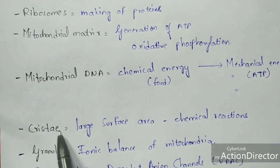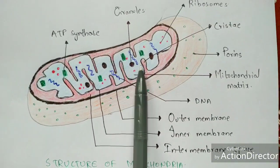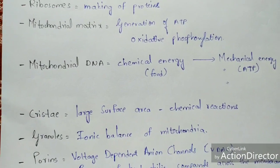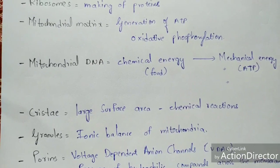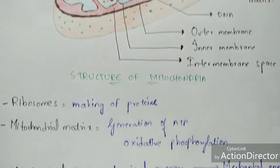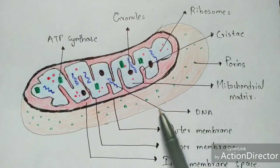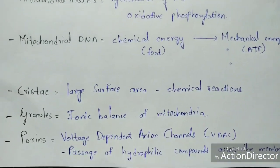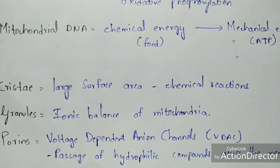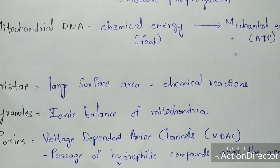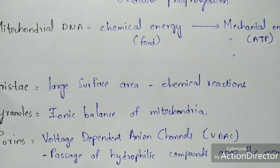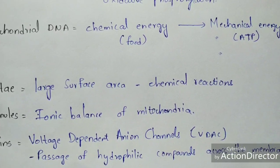Cristae are the projections which mainly help in providing a large surface area so that chemical reactions can occur properly. Granules mainly help in the maintenance of the ionic balance of the mitochondria. Porines — the green dot-like structures on the outer mitochondrial membrane — are also called voltage-dependent anion channels, abbreviated as VDAC. In different species like humans and other mammals, different kinds are present: VDAC1, VDAC2, and VDAC3. Their main function is that they are proteins which help in the passage of hydrophilic compounds across the membrane.